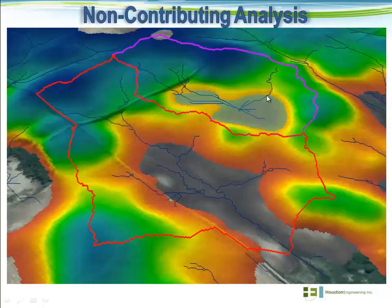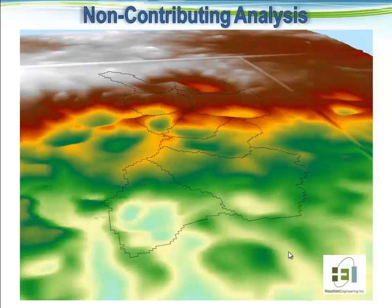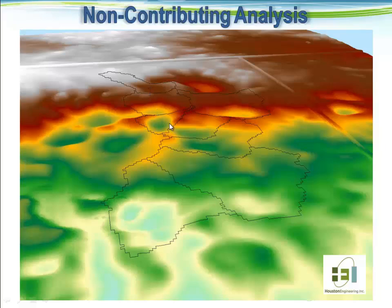By removing this particular drainage area from our hydrographic network, we've reduced the contributing area at this point by approximately a third. There is real potential, especially in areas with a lot of potholes, to significantly reduce what the contributing area actually is at points downstream. This next series of slides illustrates the iterative nature of the non-contributing analysis — basically a series of potholes that, if filled until they spilled out, would continue to spill into potholes further downstream. To account for potentially excess runoff, we go through an iterative process until no more excess runoff is produced across the landscape.